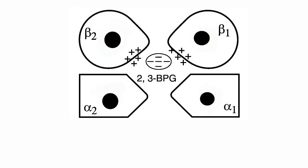Regarding the binding site of 2,3-BPG: one molecule of 2,3-BPG binds to a pocket in the center of the deoxyhemoglobin tetramer formed by the two beta-globin chains. The pocket formed by the beta-globin chains contains several positively charged amino acids that form ionic bonds with the negatively charged phosphate groups of 2,3-BPG.